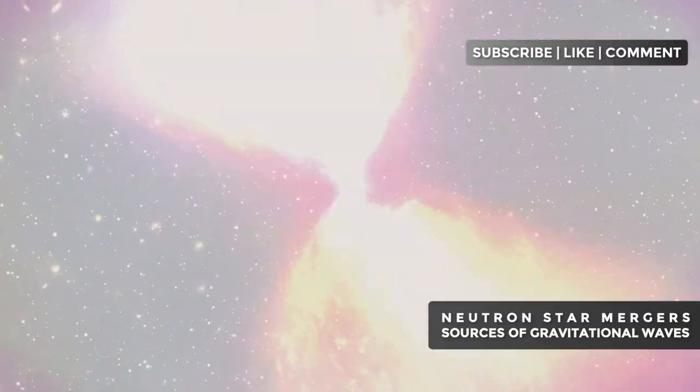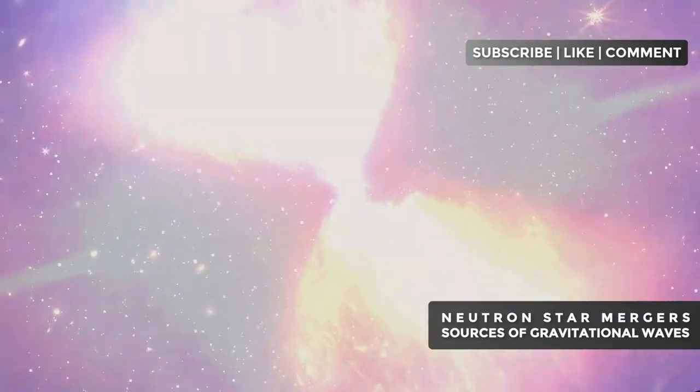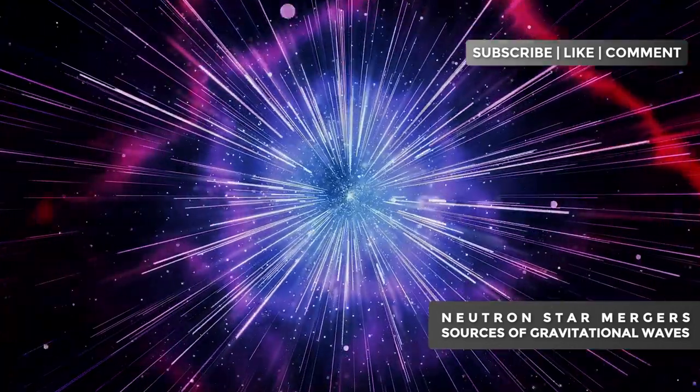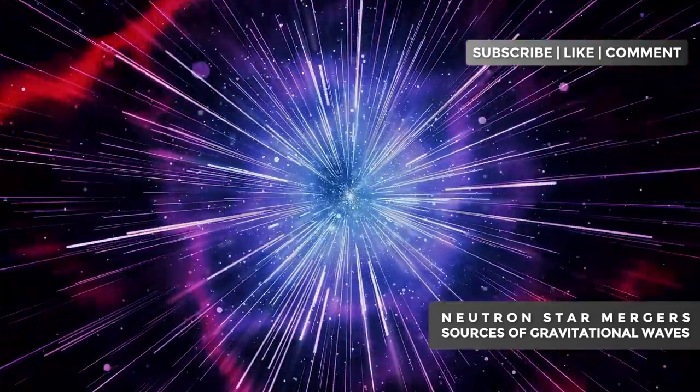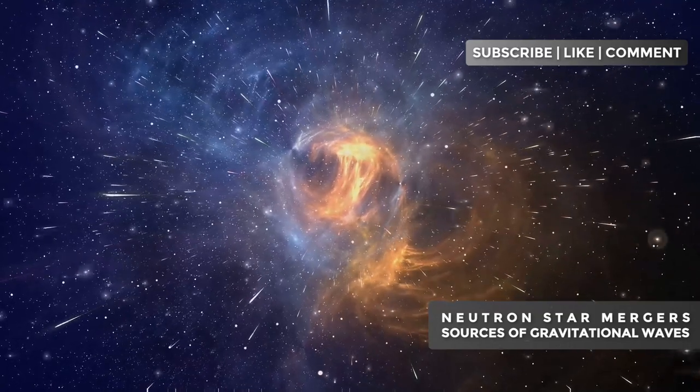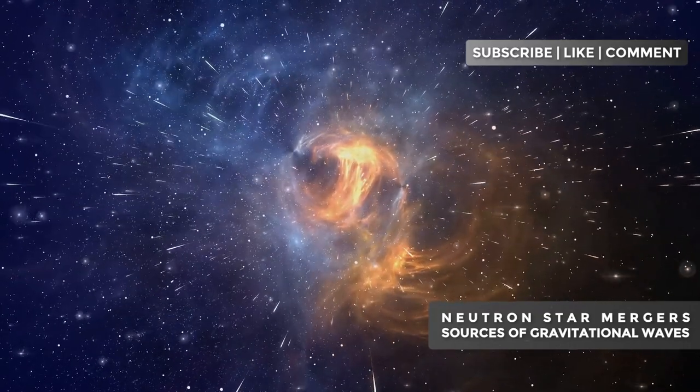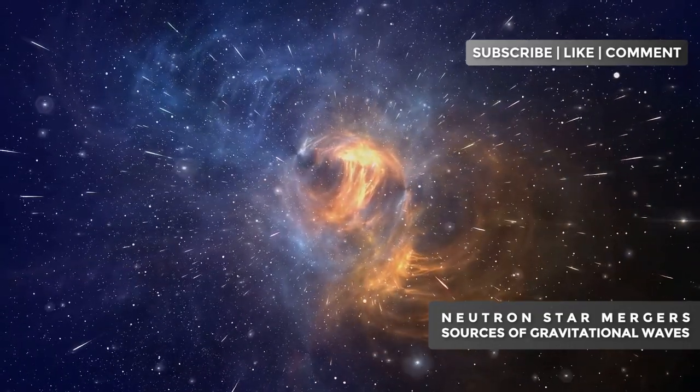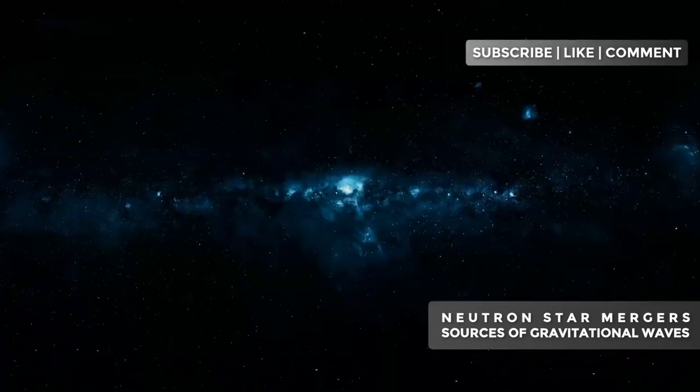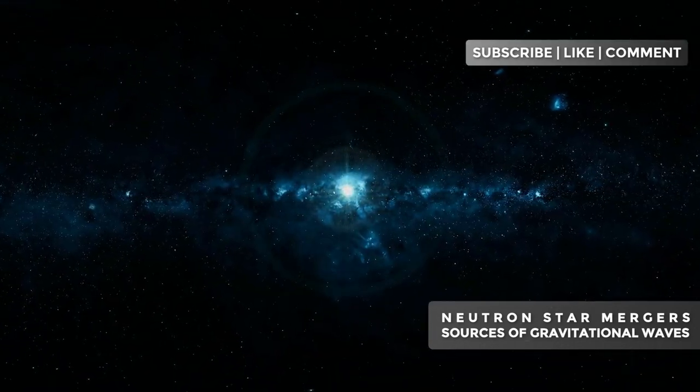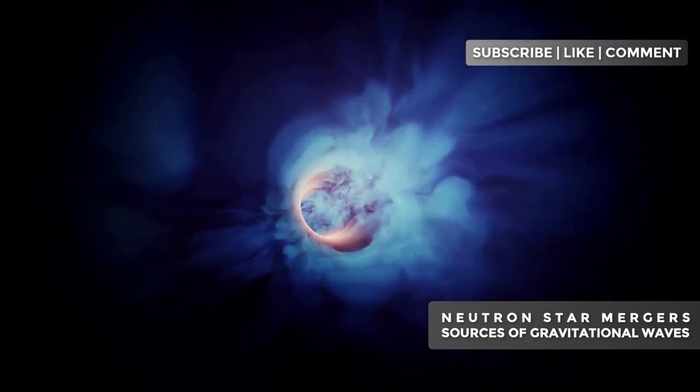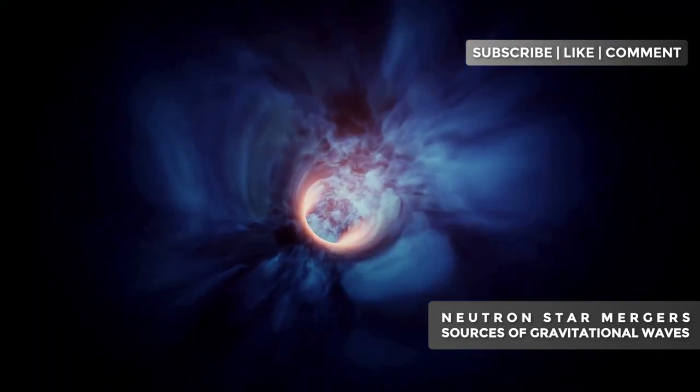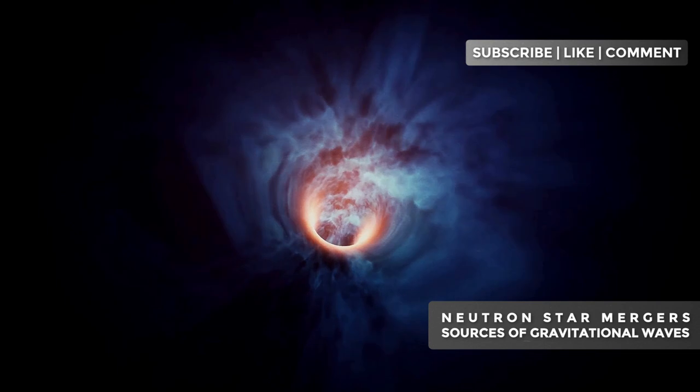Imagine a massive star, several times larger than our sun, reaching the end of its life. When its nuclear fuel is depleted, it explodes in a spectacular supernova. What's left is an incredibly dense core, compressed by gravity to the point where protons and electrons merge, forming neutrons. This remnant star, only about 12.4 miles in diameter, has a mass greater than our sun. To give you an idea, a teaspoon of this material would weigh billions of tons on Earth.